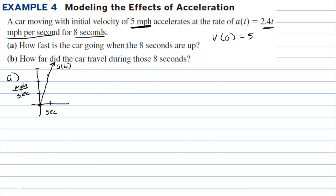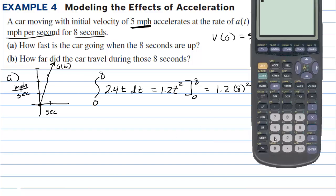It says how fast is the car going when the 8 seconds are up? So we need to find the displacement of the velocity. So we're going to integrate from 0 to 8 the acceleration function, which is 2.4t dt, which is going to be, we're going to increase the power by 1, and that's going to be 1.2 out in front. We're going to evaluate this from 0 to 8. If we plug 0 in, we're just going to get 0. So now I really just have to worry about plugging 8 in. So we need 1.2 times 64, and that's going to be 76.8.